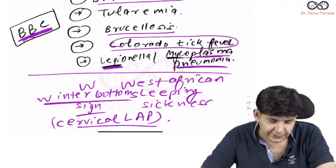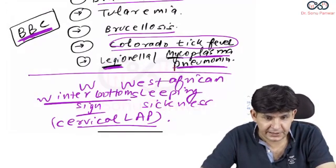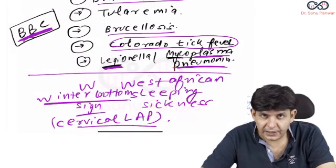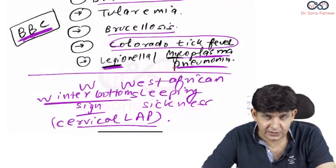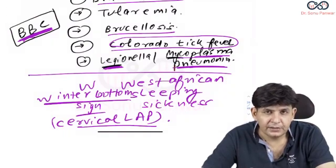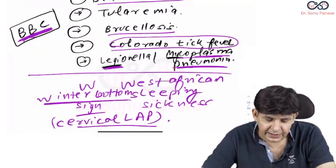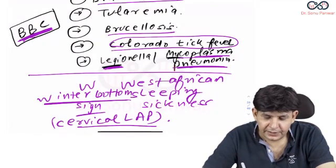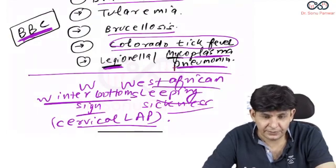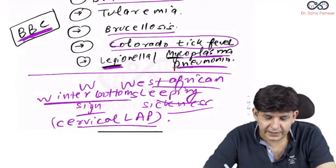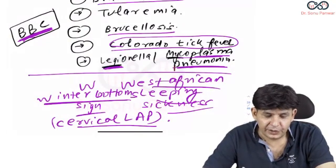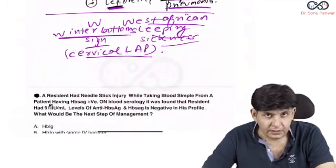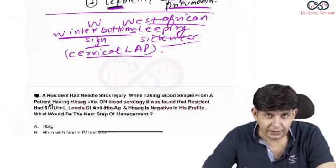So we have talked about every particular one. Chikungunya has Chik sign. Faget sign is seen in BBC and yellow tie. Romana sign is seen in Chagas disease caused by Trypanosoma cruzi, and the vector is reduviid bug. Winterbottom sign is West African sleeping sickness with cervical lymphadenopathy, and the fly involved is Glossina palpalis. The answer to that particular question is Chik sign.